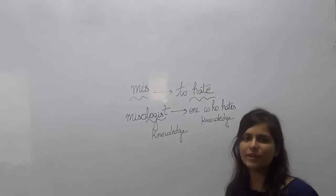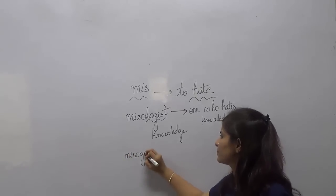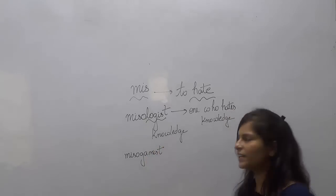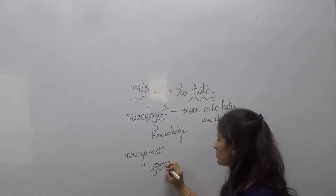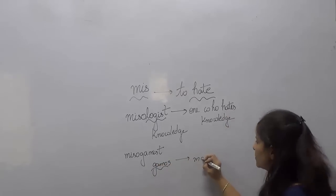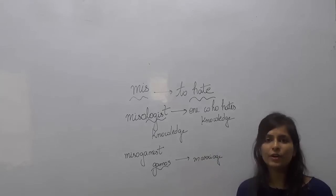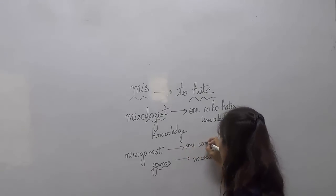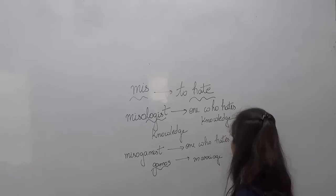The next word is 'misogamist'. The meaning of the word 'gamos' is marriage. So the meaning of the word 'misogamist' is one who hates marriage.